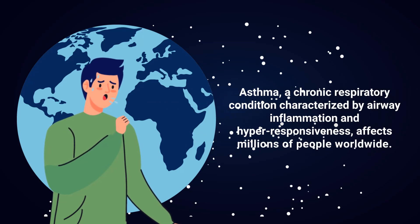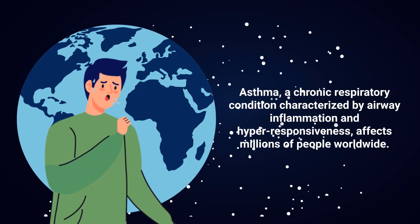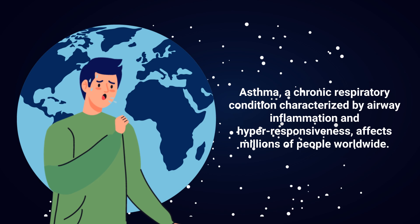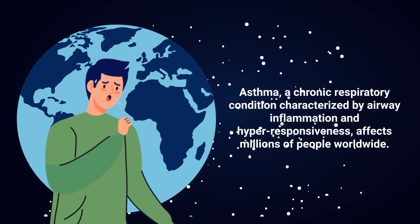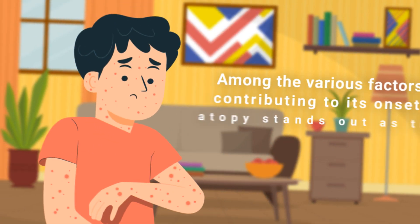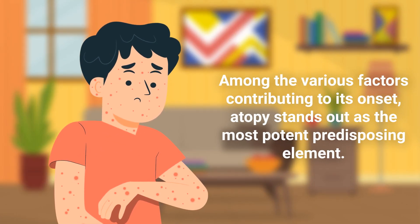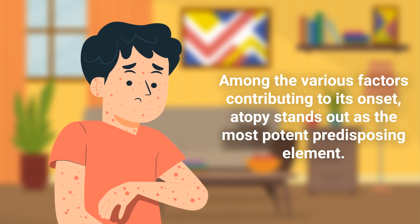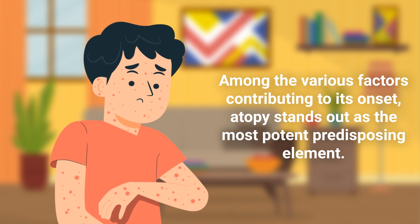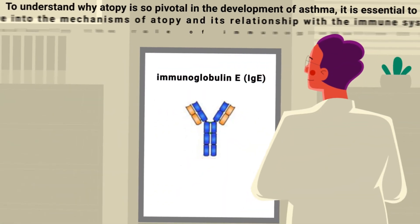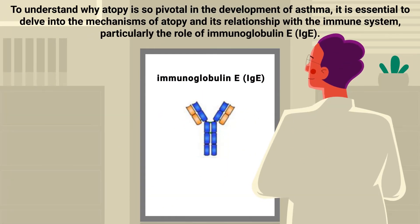Asthma, a chronic respiratory condition characterized by airway inflammation and hyper-responsiveness, affects millions of people worldwide. Among the various factors contributing to its onset, atopy stands out as the most potent predisposing element.